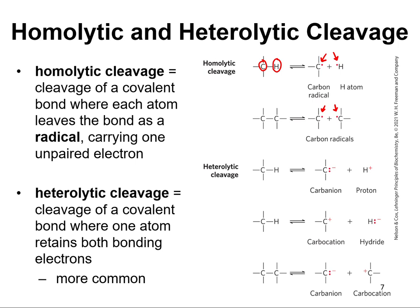Heterolytic cleavage is like there was a prenuptial agreement — one atom gets all of the electrons, the other gets none. If you break a carbon-hydrogen bond heterolytically, you can make a hydride, which is a hydrogen that carries electrons. Or with a carbon-carbon bond, you get one carbanion with two electrons and a carbocation that is positively charged. Heterolytic cleavage is much more common in biological reactions, so that's the one you should definitely know.